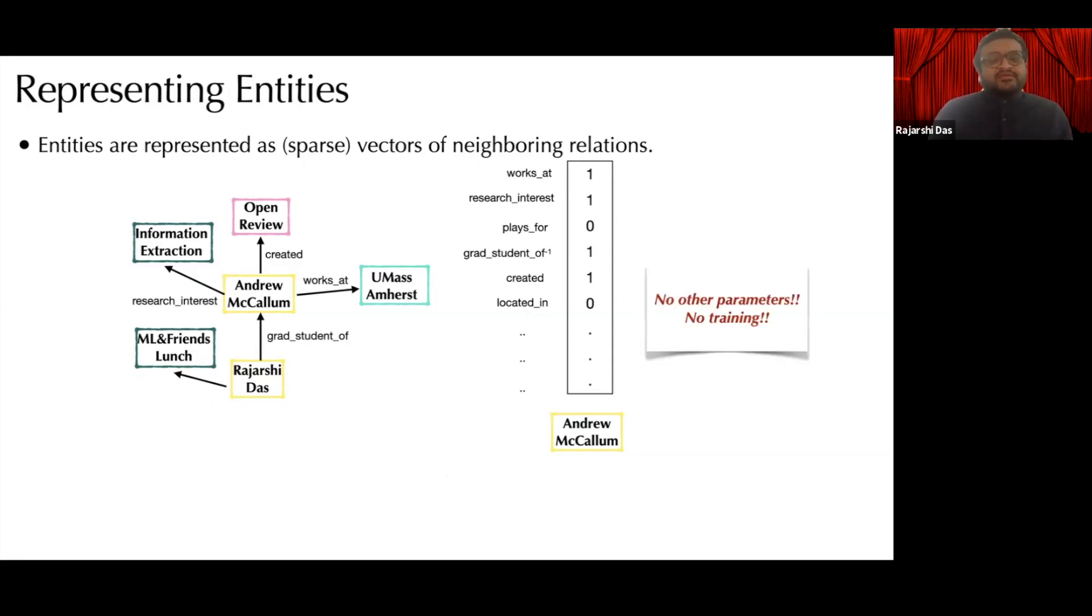Apart from these sparse entity representations, our model requires no other parameters and does not require any training. The similarity is the cosine similarity between entities and for a given query, we consider only those entities for which we observe the query relation.